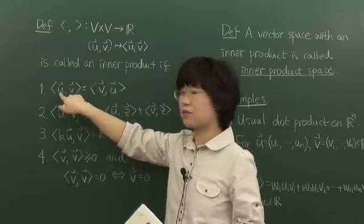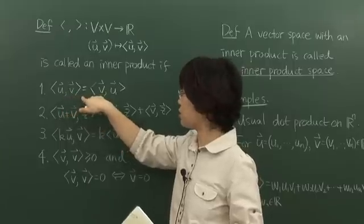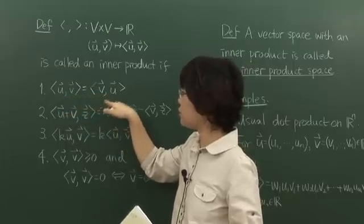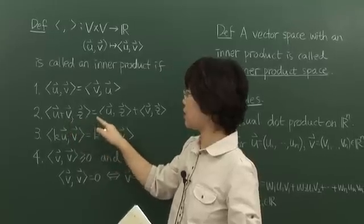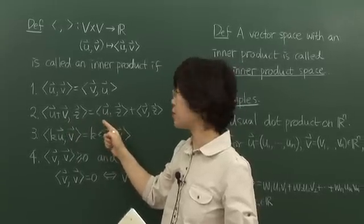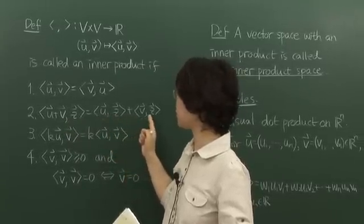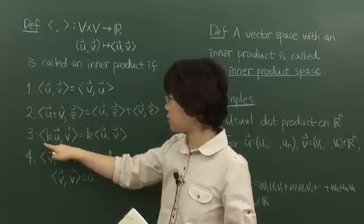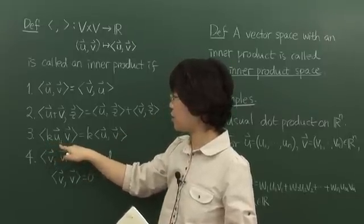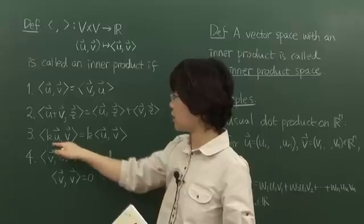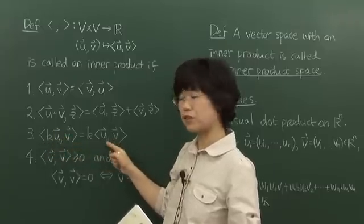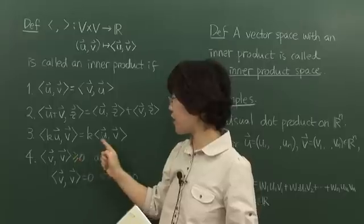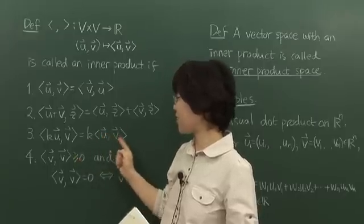Inner product of U and V equals the inner product of V and U. Inner product of U plus V and Z equals the inner product of U and Z plus inner product of V and Z. And the inner product of kU and V is k times inner product of U and V.